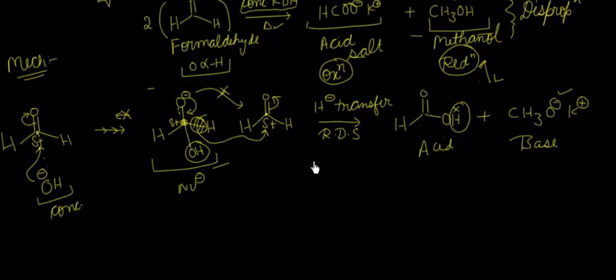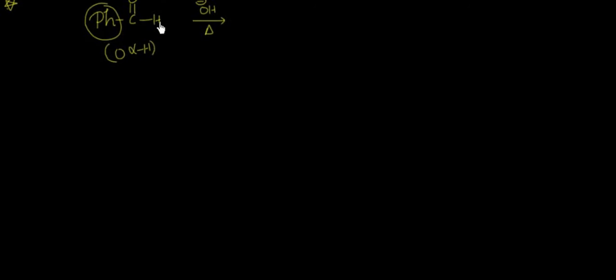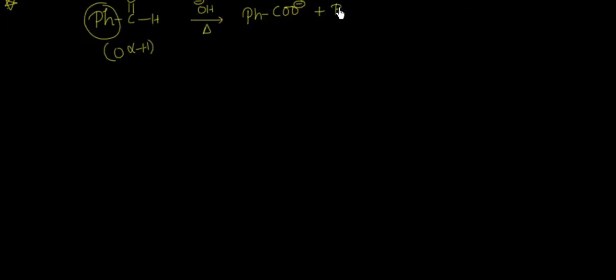Now let us take a few examples — उनसे आपको clarity ज्यादा रहेगी। Let us say we have taken Ph-CHO — यानि benzaldehyde। Benzaldehyde के सामने given है OH minus और साथ में heat। तो ऐसे case में, you can see clearly कि इस carbon के बगल में कोई भी alpha hydrogen available नहीं है। जब 0 alpha-H है और सामने base given है, तो इसका मतलब यहां पे Cannizzaro reaction होगी। अगर हम इस aldehyde को oxidize करते हैं तो यहां पे acid का salt बनेगा — यानि Ph-COO-। और अगर इसको reduce करेंगे, तो यह Ph-CH2-OH में — यानि alcohol में — convert हो जाएगा।